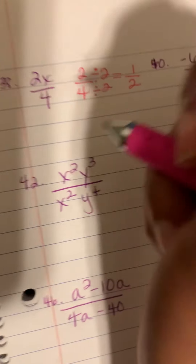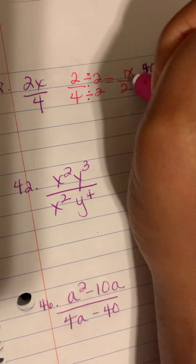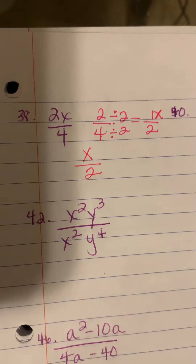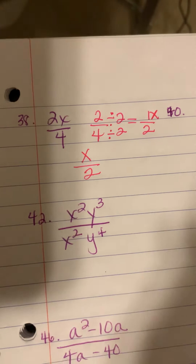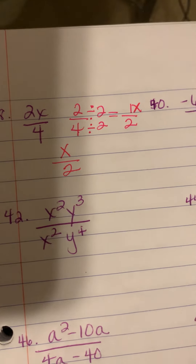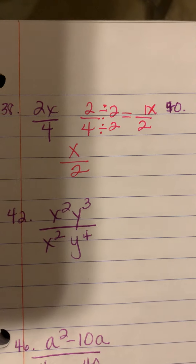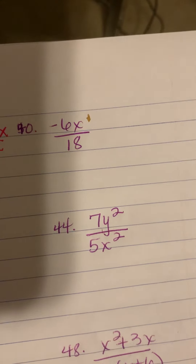Four divided by two is two. The only difference is you keep your x on top. In the book you may see x over two, because sometimes they don't write the one since it's already understood. But if you put the one in front, that's fine.